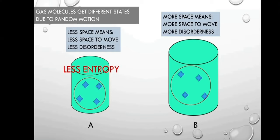In physics, we say that over time, due to less available space in System A, the gas molecules will experience less disorderness. While in System B, due to the large space it has, the gas molecules will become more disordered. Simply remember that gas molecules in System A are less free to move, while gas molecules in System B are more free to move.